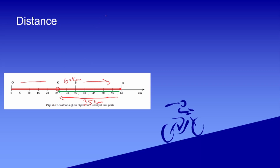So how much distance has it covered? From O to A is 60 km, and then from A back to C is 35 km. So the total length of the path traveled is 60 + 35 = 95 km. That is the distance. Do we need direction for this? No — it was going east, then west, but we don't differentiate. Distance is the total length of path covered. It is a scalar quantity — we are interested only in magnitude.